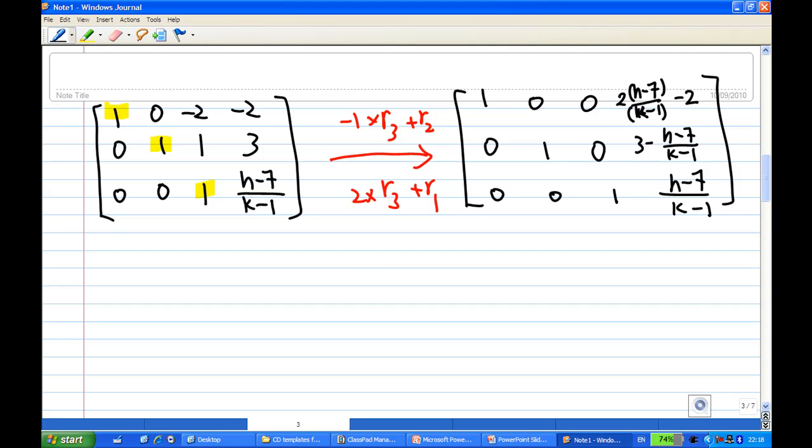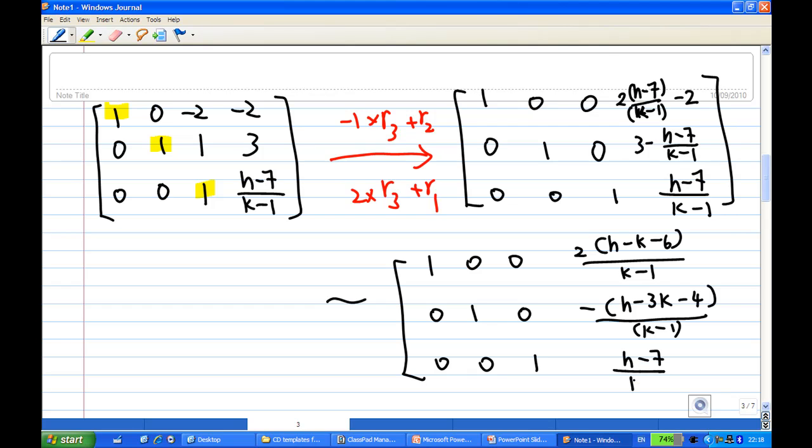Which you can simplify as: first row (1, 0, 0, 2(h-k-6)/(k-1)), second row (0, 1, 0, -(h-3k-4)/(k-1)), and third row (0, 0, 1, (h-7)/(k-1)).